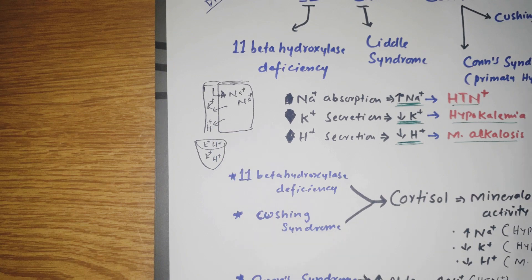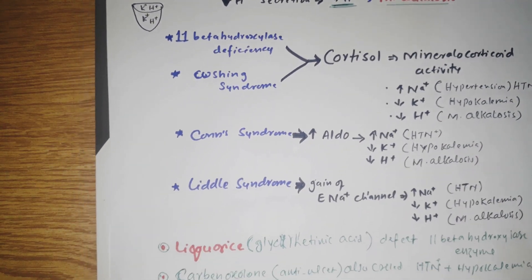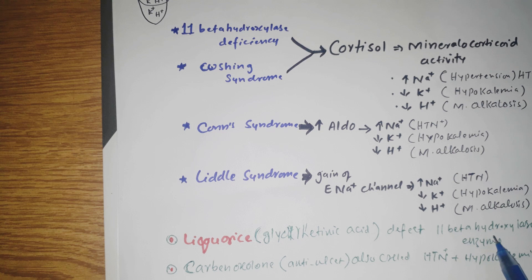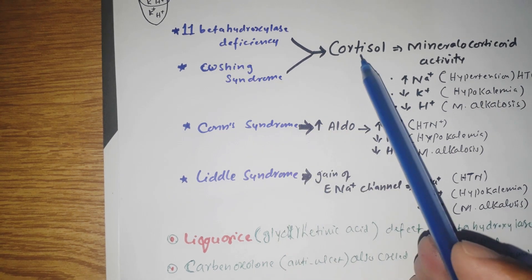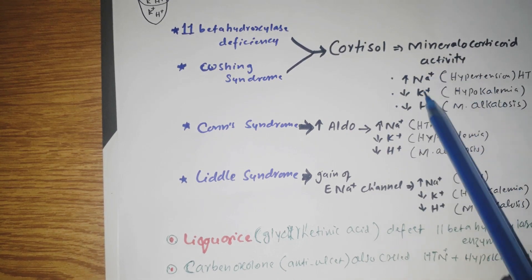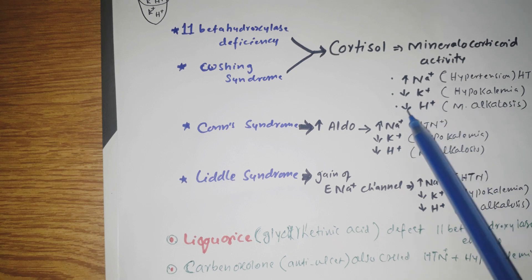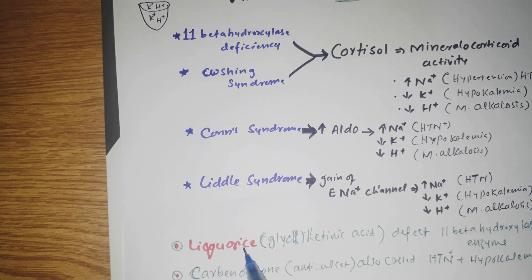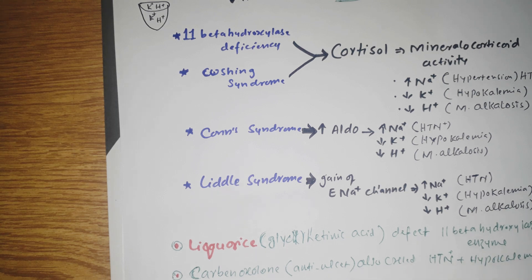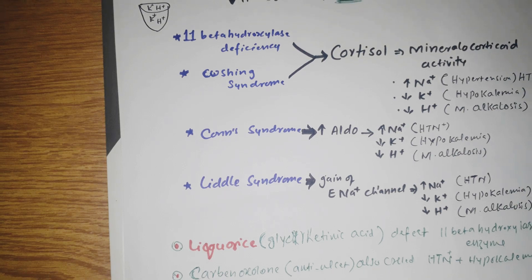Licorice can also inhibit 11-beta hydroxylase enzyme, increasing cortisol and thereby increasing sodium absorption, potassium secretion, and proton secretion. Licorice is therefore a cause of hypokalemia associated with hypertension. Carbenoxolone, an anti-ulcer drug, also causes hypokalemia associated with hypertension.